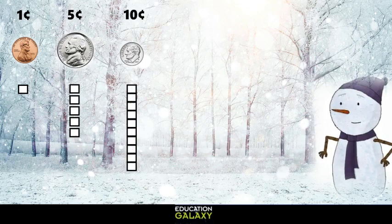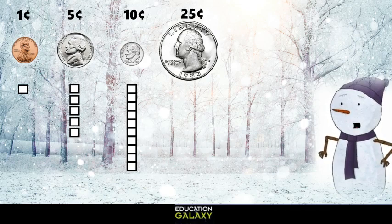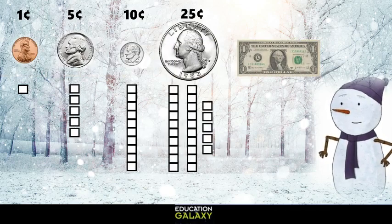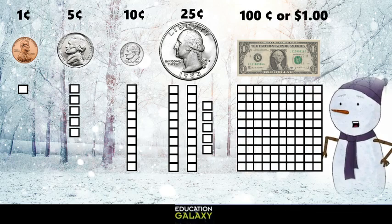Whoa, look out! Here comes the big one — the quarter. It's twenty-five cents, so let's use two tens and five ones. And last, we have the dollar bill. That's worth one hundred cents, or one dollar. We can use the hundreds block for this big guy.